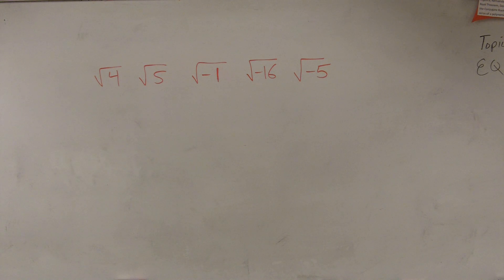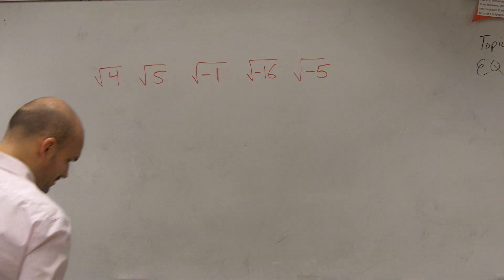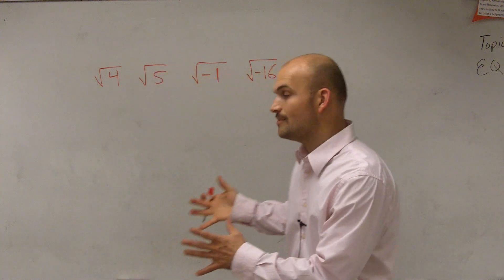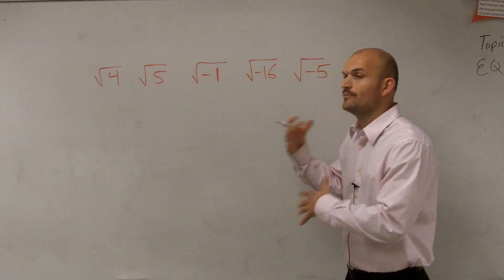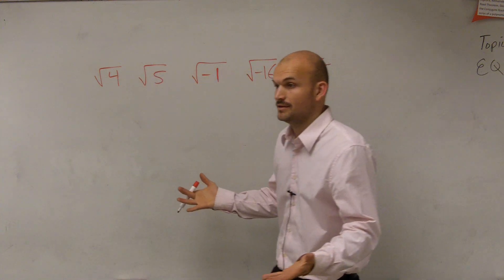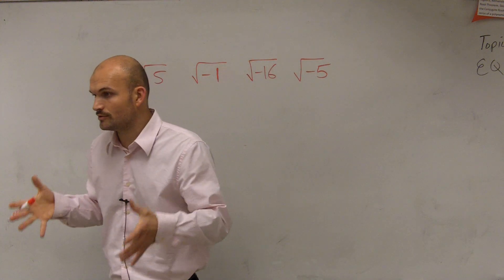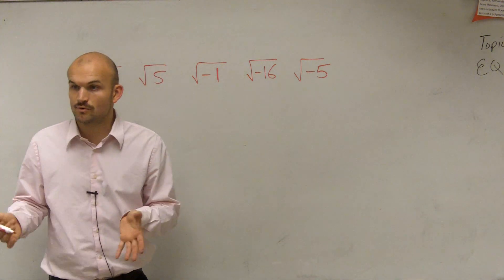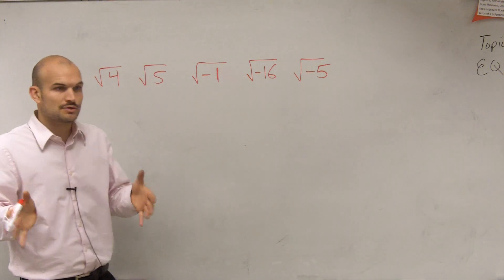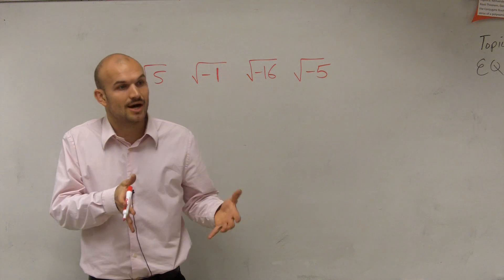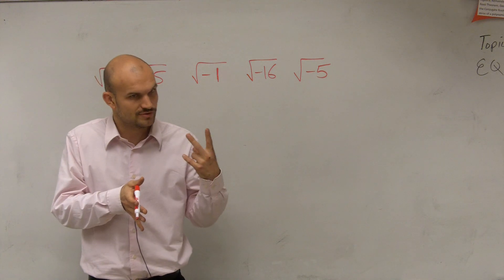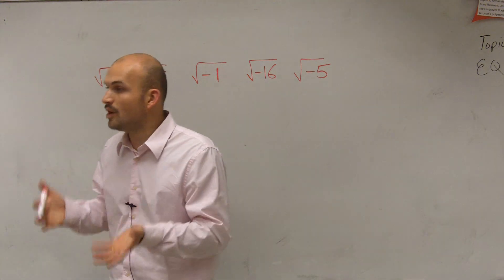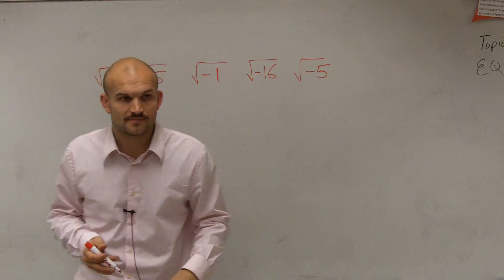Let's go back through and remember — I have tons of videos on complex numbers. What does square root mean? Square root means the reciprocal of squaring. If you square a number, that means multiplied by itself two times. So the square root would be: what number multiplied by itself gives you that answer?